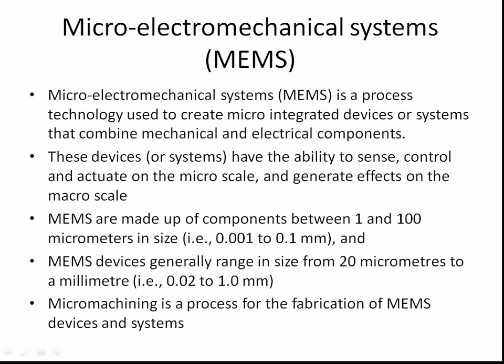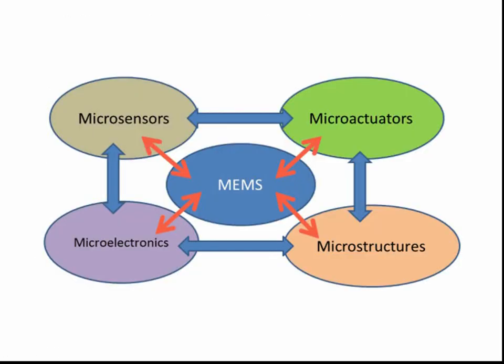Micro-machining is a process for the fabrication of MEMS devices and systems. The main components of micro-electro-mechanical systems are Micro-structures, Micro-actuators, Micro-sensors, and Micro-electronics. These are the four pillars of MEMS.